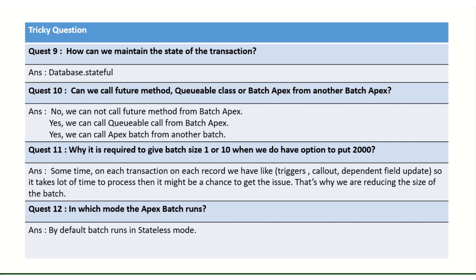Why would we give a batch size of 1 or 10 when the maximum is 2000? This is a common MNC interview question. The reason depends on the operation being performed — it may involve triggers, callouts, complex logic, or lookup and master-detail relationships. With heavy processing, you risk hitting CPU time or transaction errors, so a smaller batch size is used to avoid those issues.